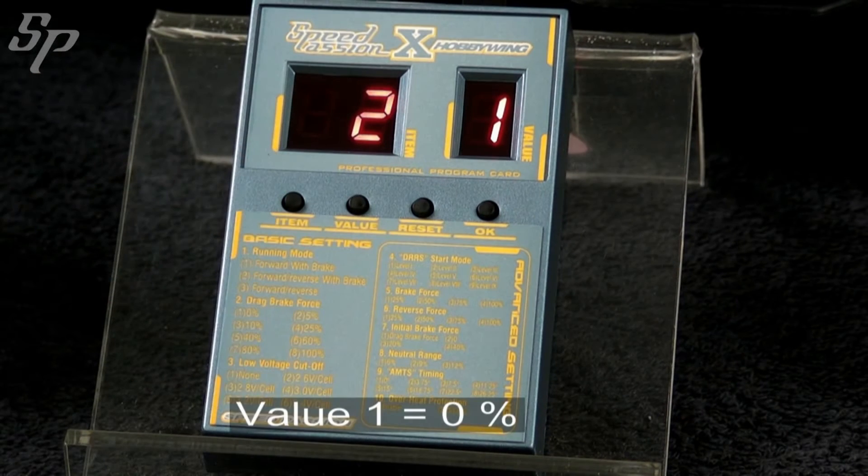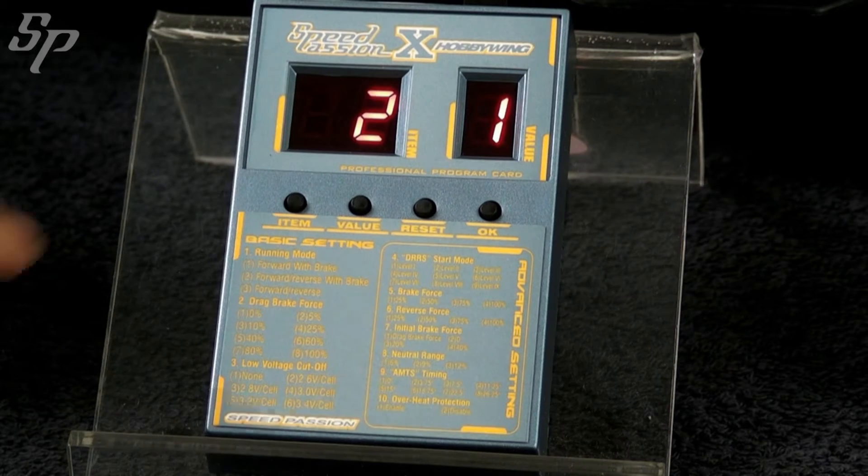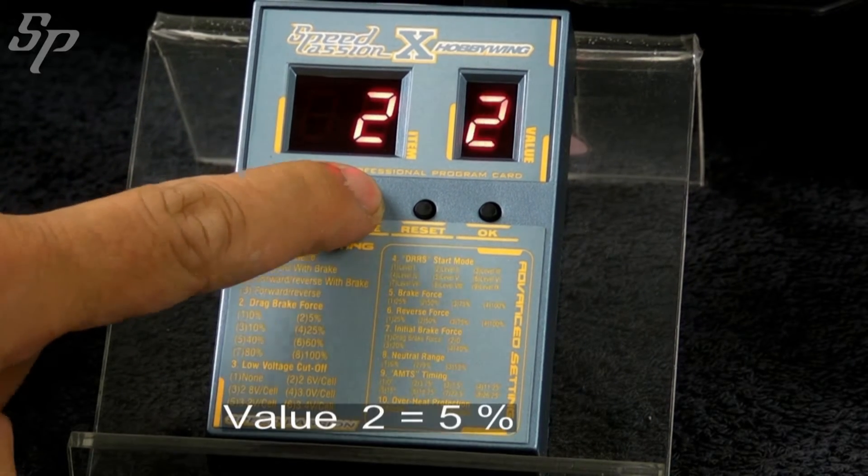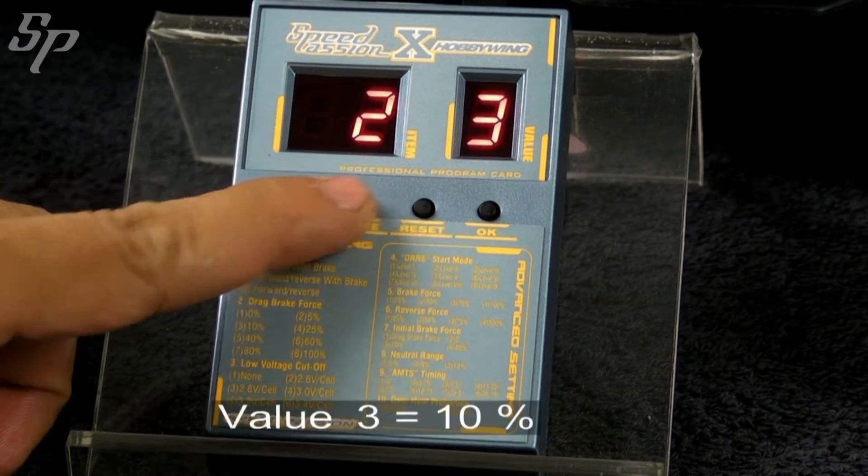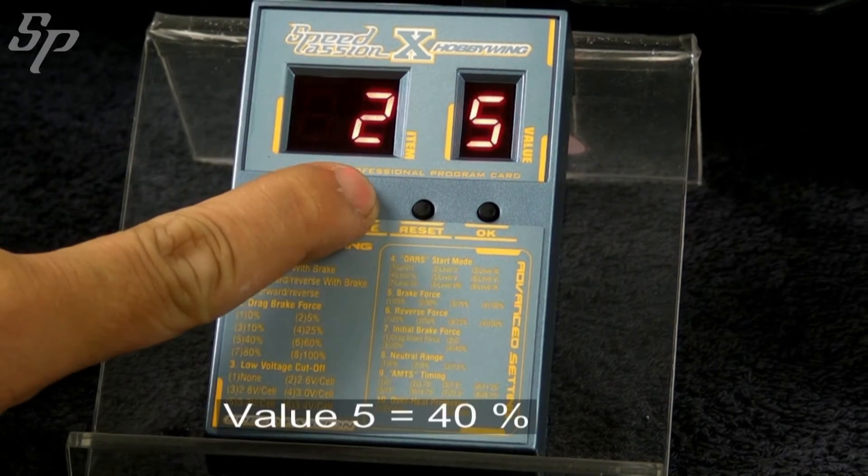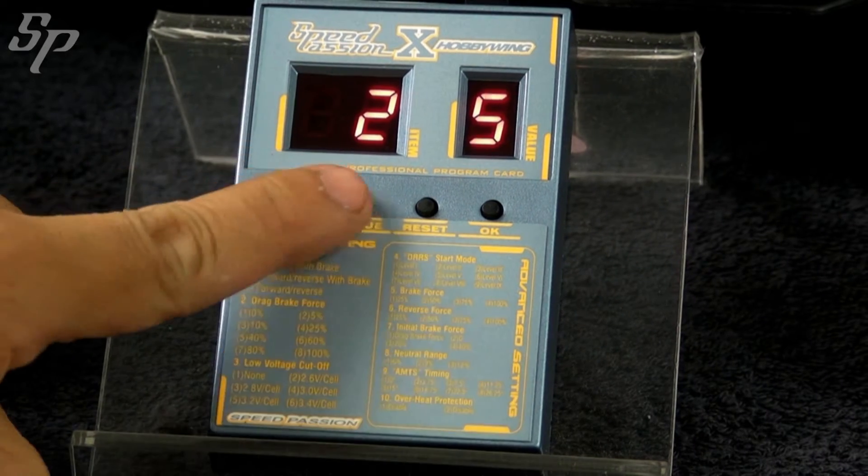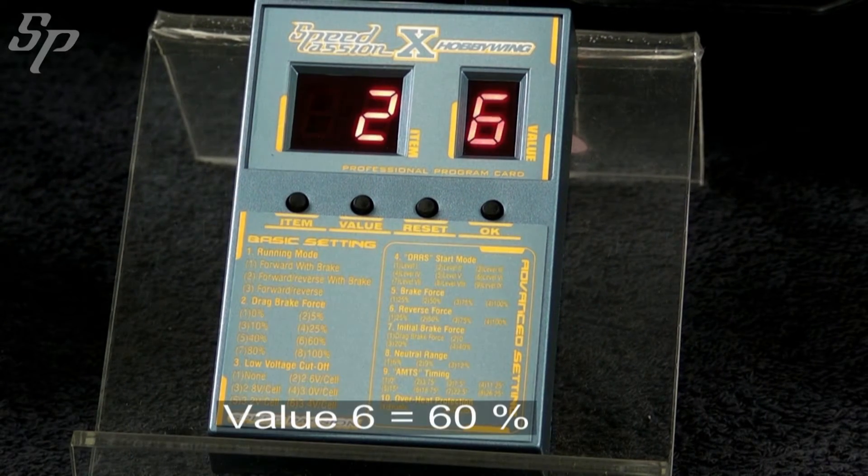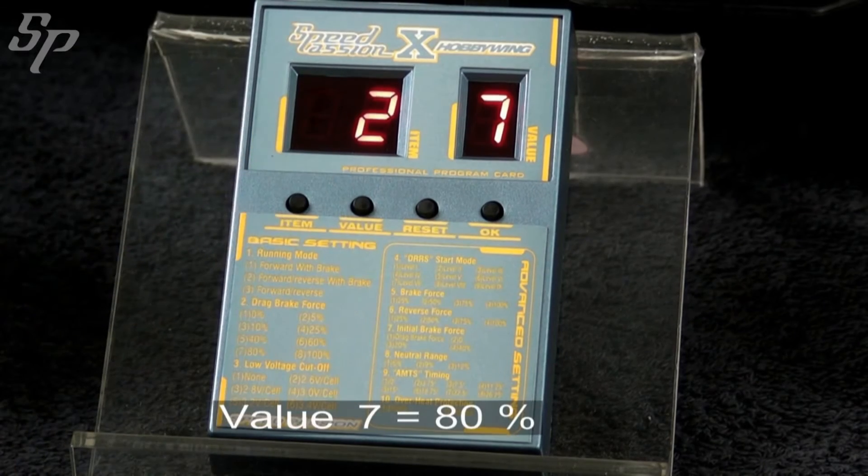Item 2 is all about drag brake. When you release the trigger, the brake function will initiate. There are 8 different settings here. The larger the value you set, the greater the brake drags.